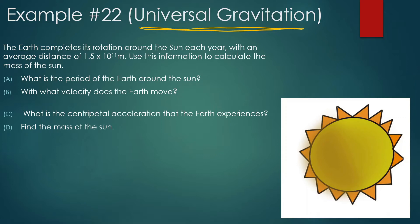The Earth completes its rotation around the Sun each year with an average distance of 1.5 times 10 to the 11 meters. Use this information to calculate the mass of the Sun. Let's draw the whole situation out. We have the Sun, and we have the Earth orbiting the Sun like this. The average distance is 1.5 times 10 to 11 meters.